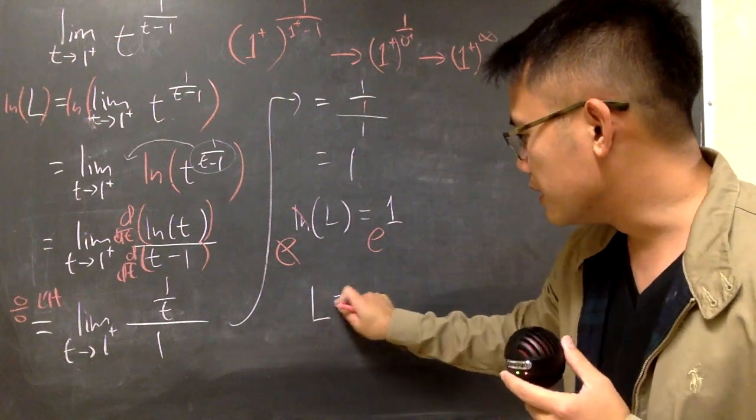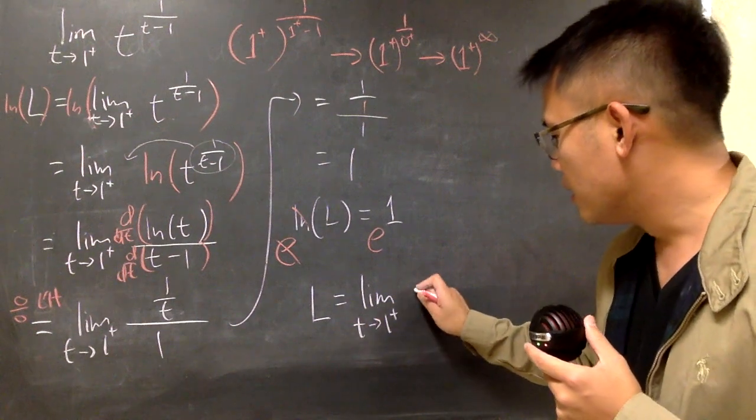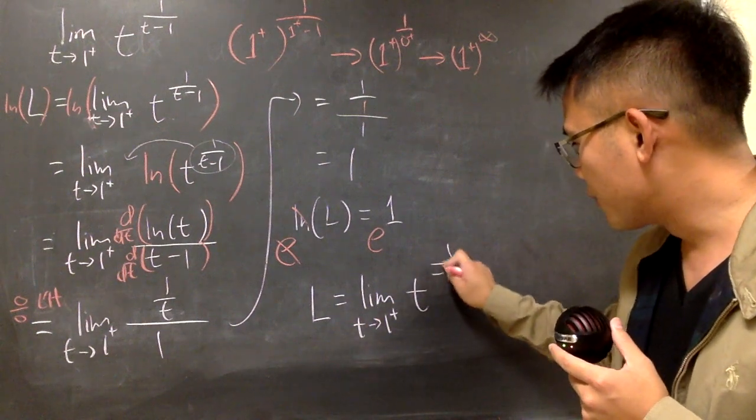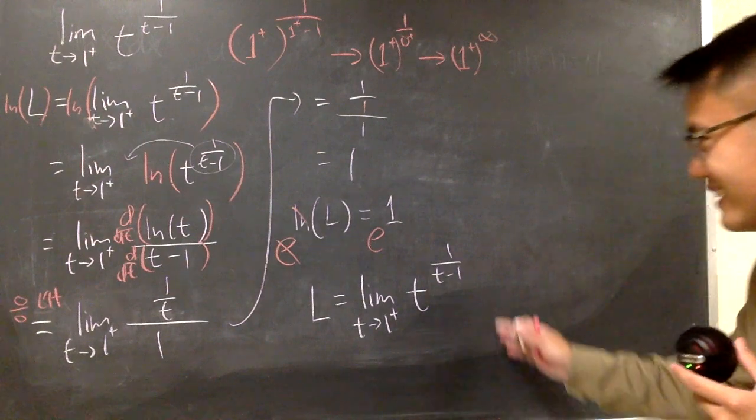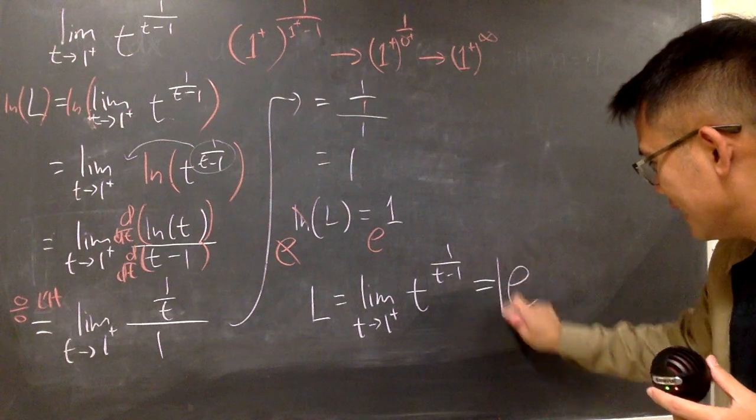which is the limit that we're looking for, t goes to 1 plus of t raised to the 1 over t minus 1's power, like this. This is equal to e to the first power, which is nicely equal to e, like that.